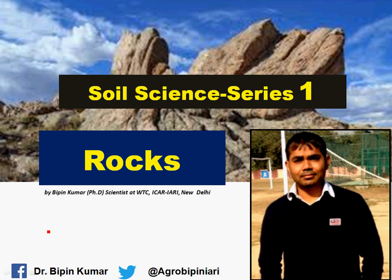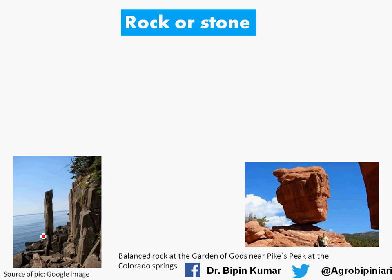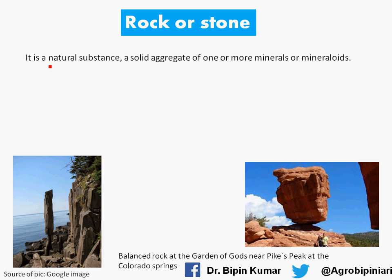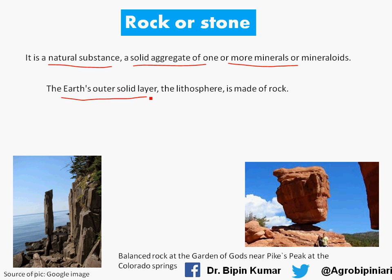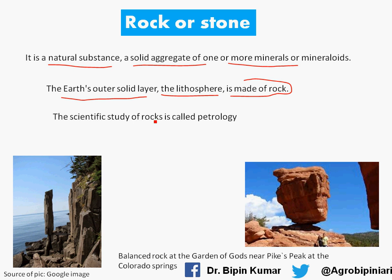Hello everyone, I am Vipin Kumar and today's topic is soils and trees. I am going to discuss about rocks. A rock is a natural substance or solid aggregate of one or more minerals. The earth's outer solid layer is called the lithosphere and is made up of rocks. What we see on the ground is mainly made up of rocks in the form of pebbles and mountains. The scientific study of rocks is called petrology.